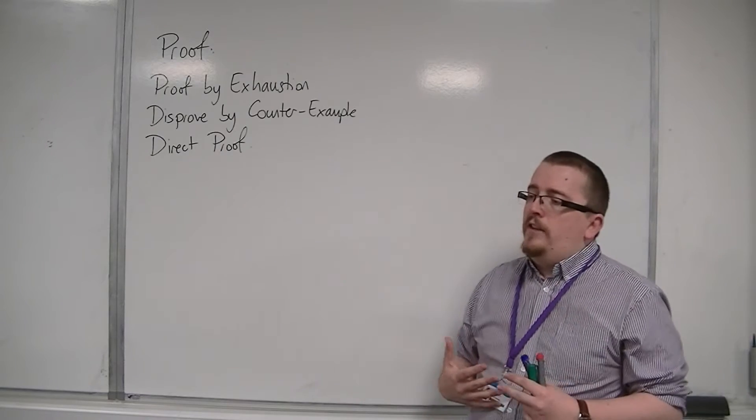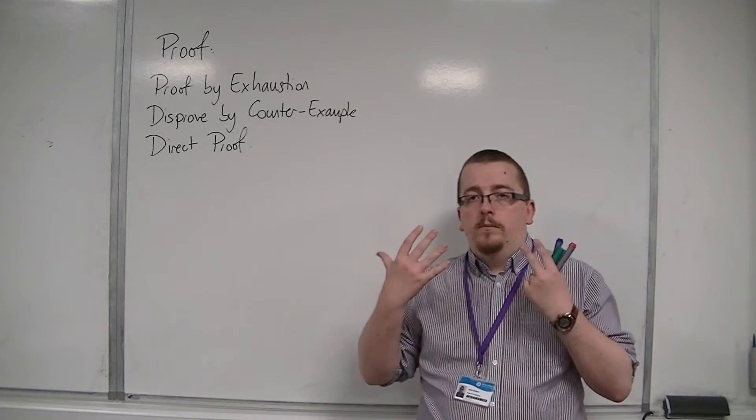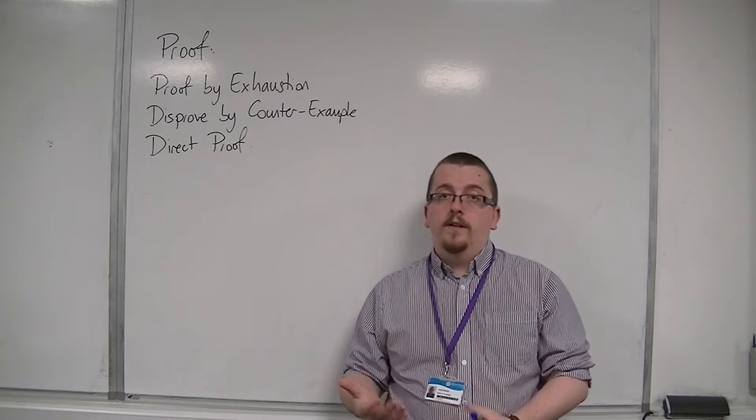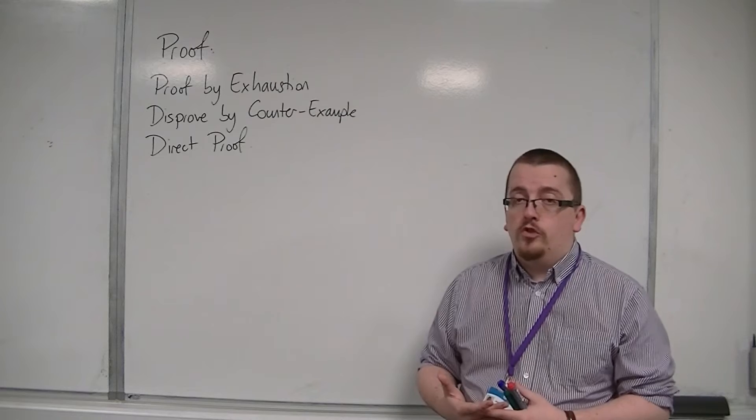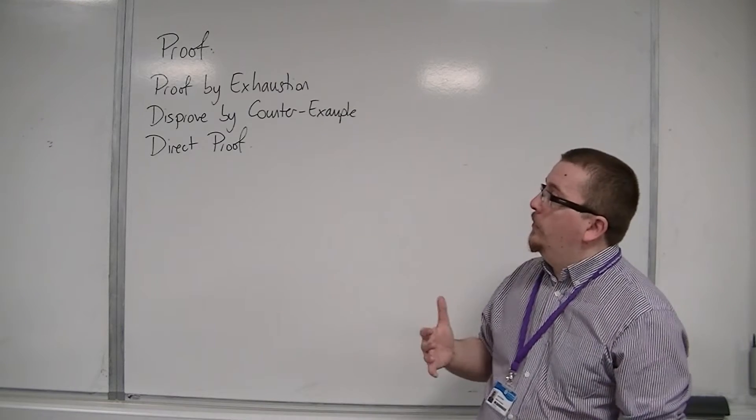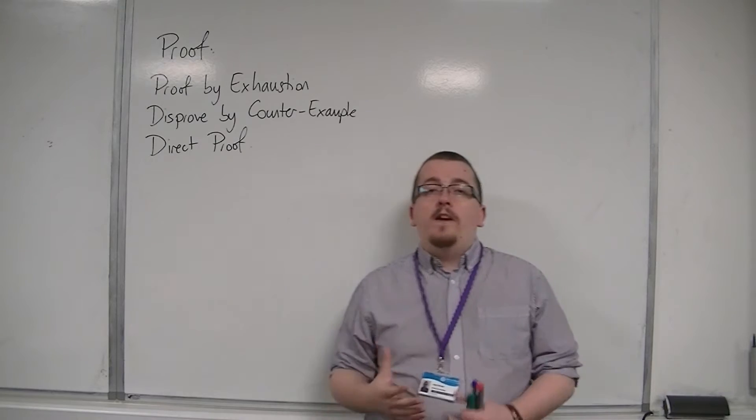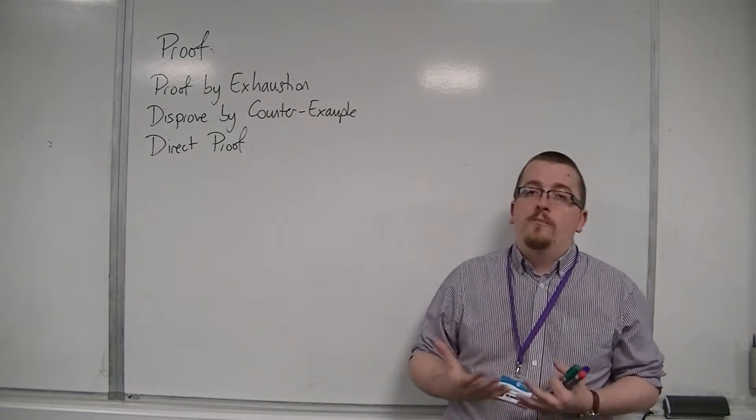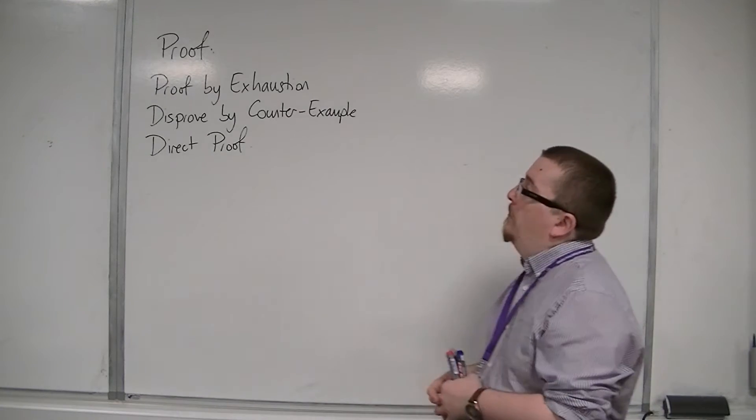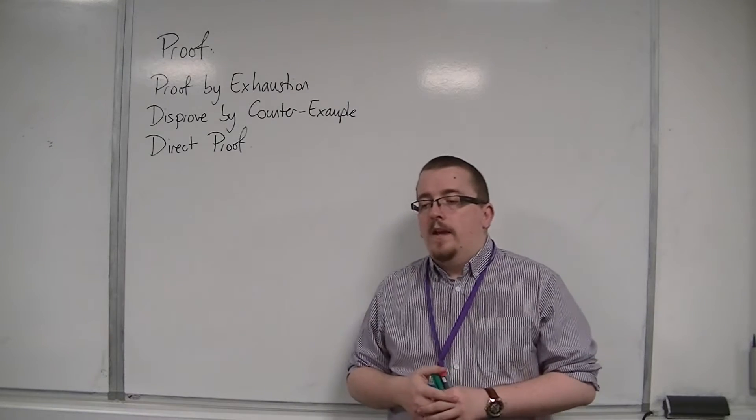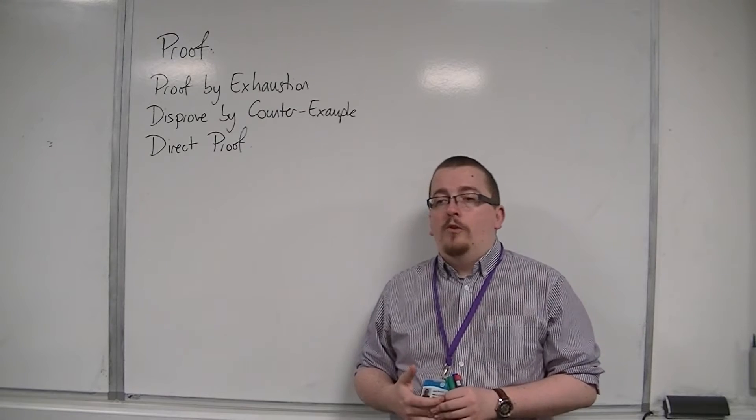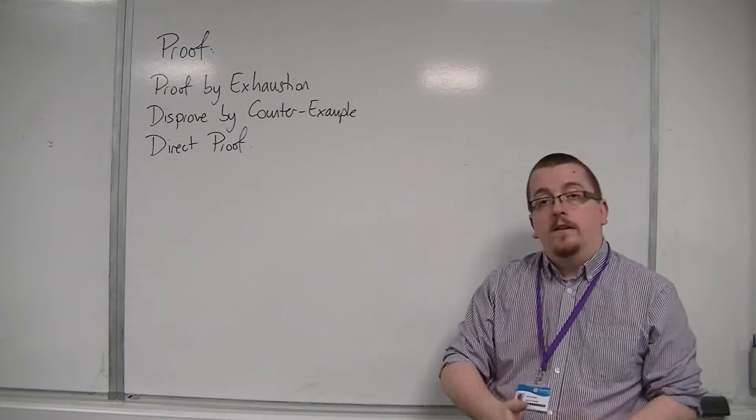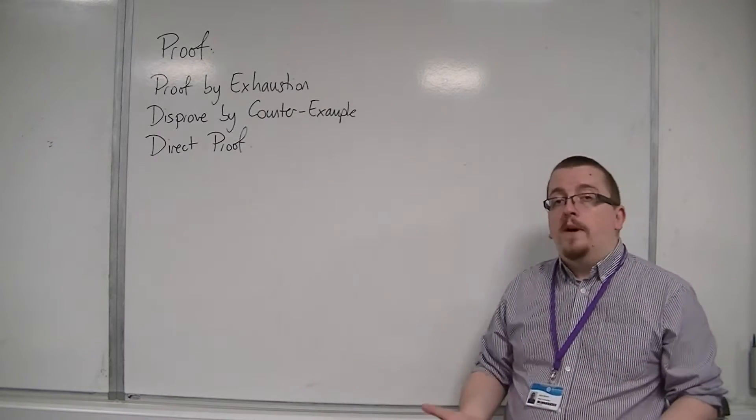What that means is that you've tried every single possibility, and therefore you have shown that if they all work, then in general the statement is true. Of course, for some examples, proof by exhaustion is just impossible. If there are infinitely many ways, or infinitely many possibilities, then you cannot do proof by exhaustion. But if you wanted to show that an equation worked for ten particular values of x, then you could certainly plug those ten particular values of x in and show that they all worked, and that would be proof by exhaustion.